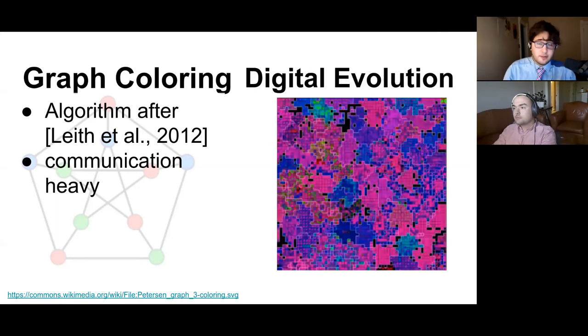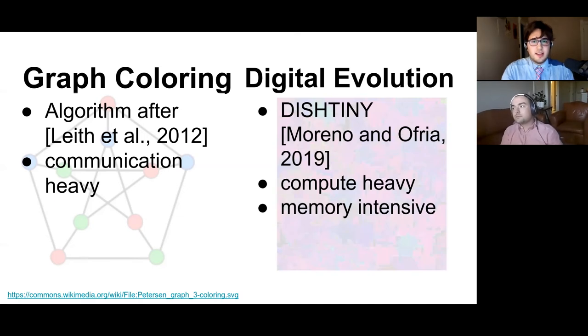The second problem is a digital evolution problem. We basically run Dishtiny which is a simulation used to study multicellularity and it's a very compute heavy and memory intensive program but there's not really much communication between nodes.